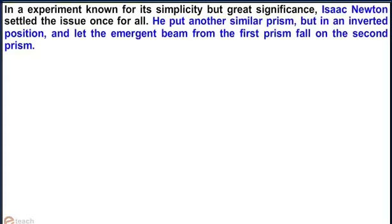In an experiment known for its simplicity but great significance, Isaac Newton settled the issue once for all. He put another similar prism but in an inverted position and let the emergent beam from the first prism fall on the second prism.